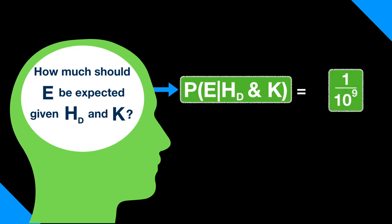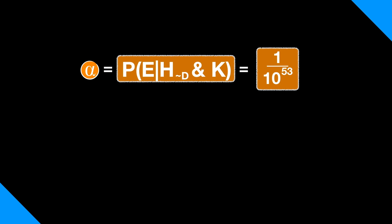The next 30 seconds are going to be the most math-heavy. But just know, it's not essential that you understand these steps to get the overall argument. I'm doing this for those who, like me, want the details. To simplify our equation, let alpha represent the probability of E given H not D and K. That's equal to 1 over 10 to the 53rd.